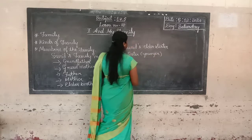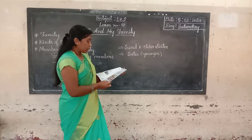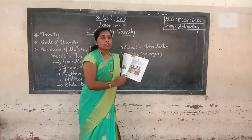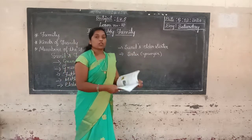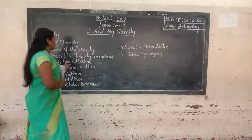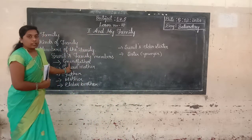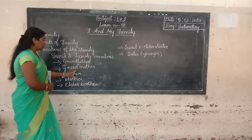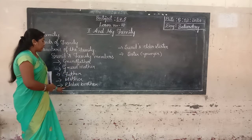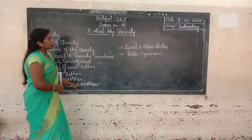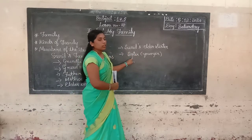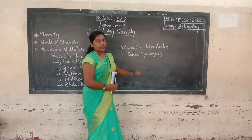And Sunil's younger sister. So this is the picture of Sunil's family. Who lives in Sunil's family? Grandfather, grandmother, father, mother, Sunil's elder brother, Sunil's elder sister, and Sunil's younger sister.